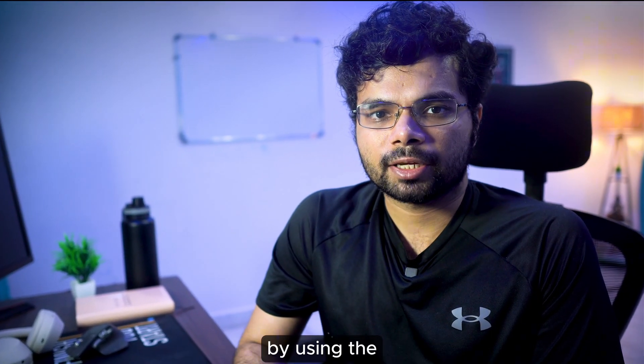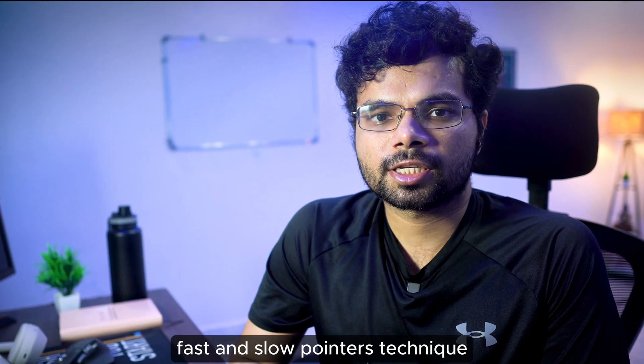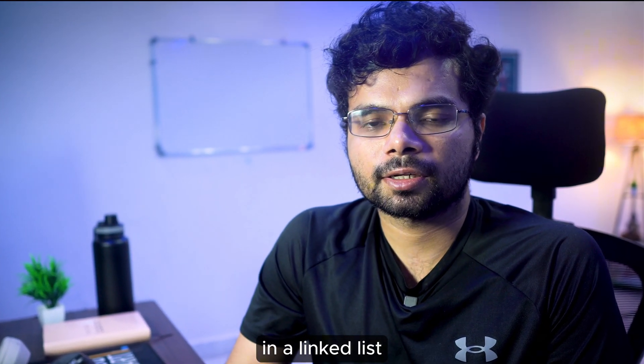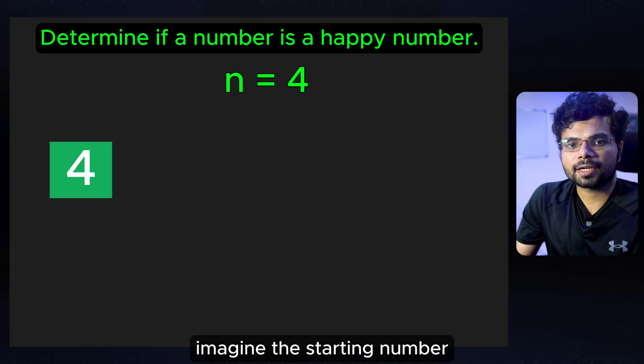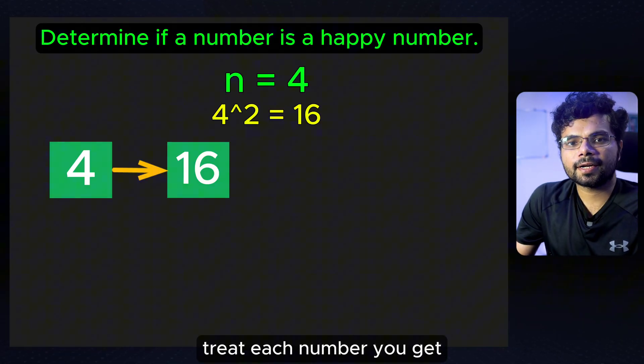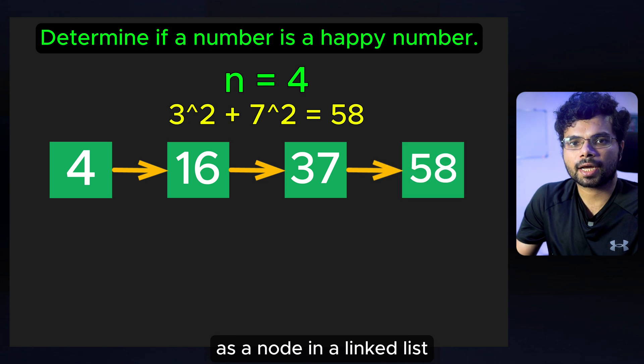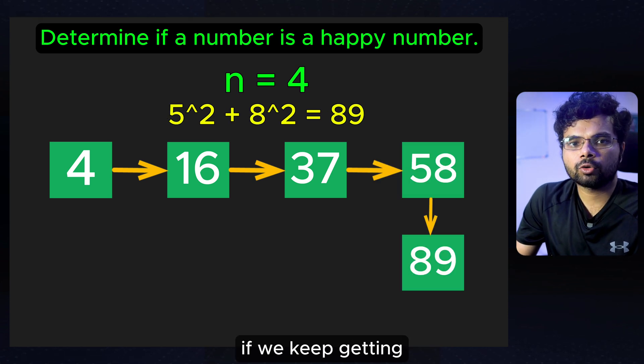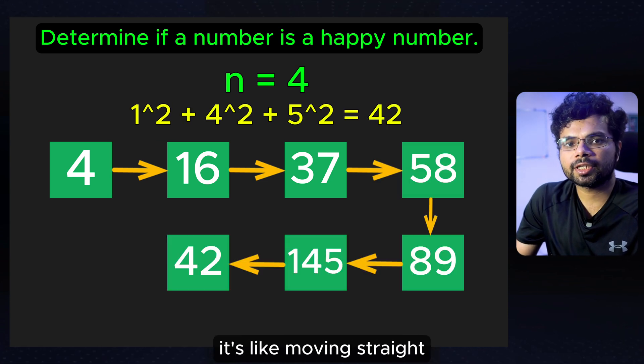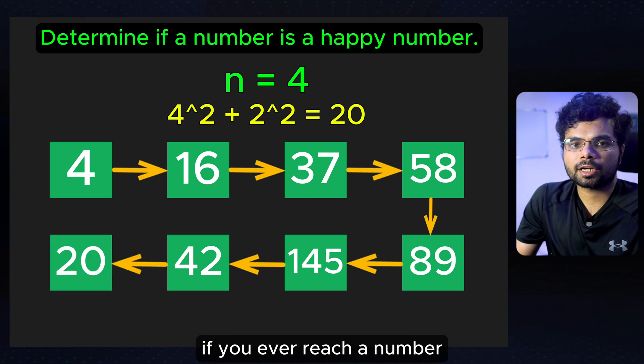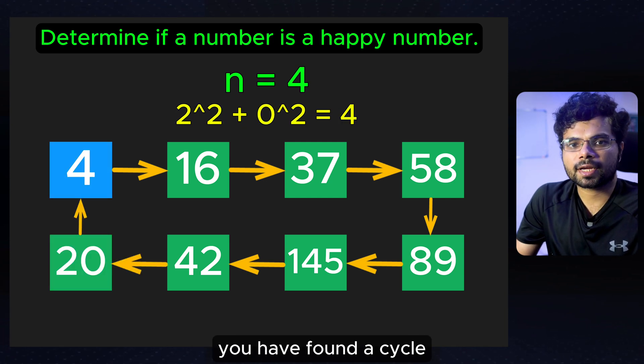We can make this more efficient by using the fast and slow pointers technique, similar to detecting cycles in a linked list. Here is how it works. Imagine the starting number as the head of the linked list. Treat each number you get after summing the squares of its digits as a node in a linked list. If we keep getting new numbers without repeating, it's like moving straight through a linked list. If you ever reach a number you have seen before, you have found a cycle.